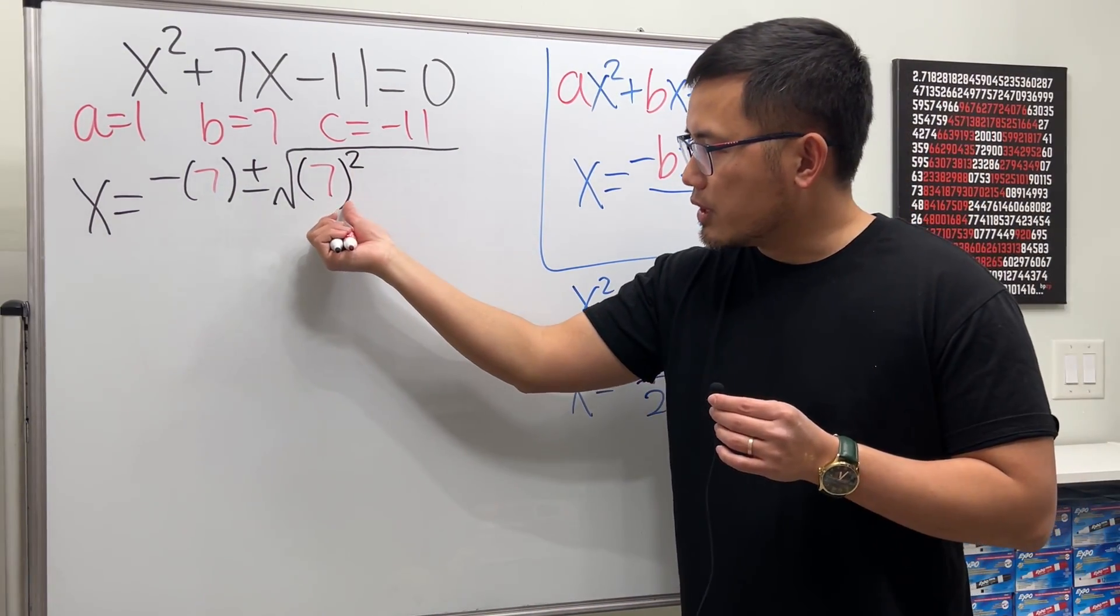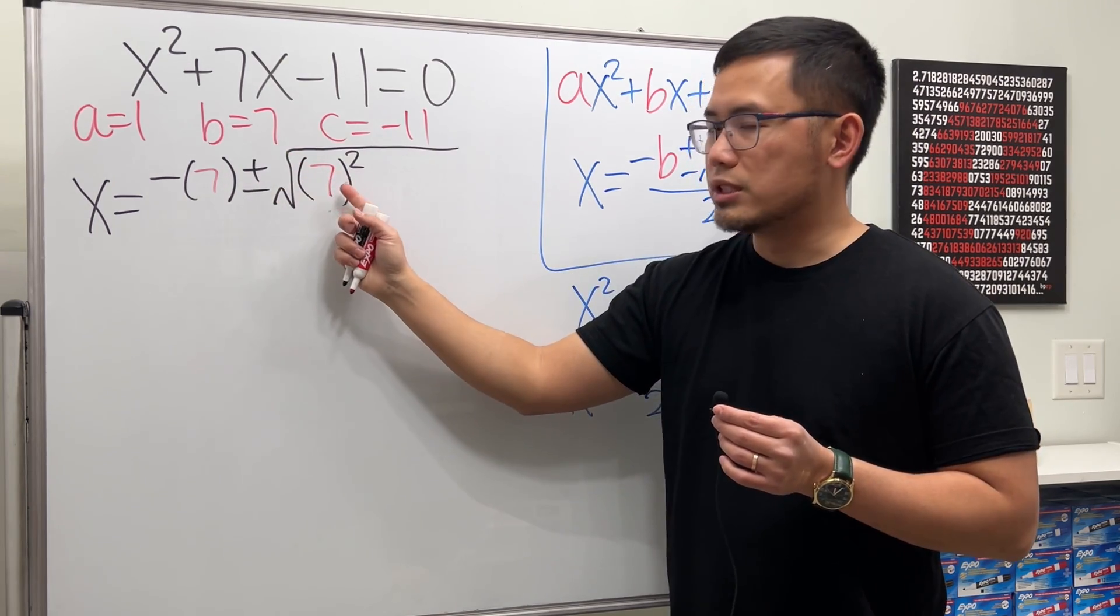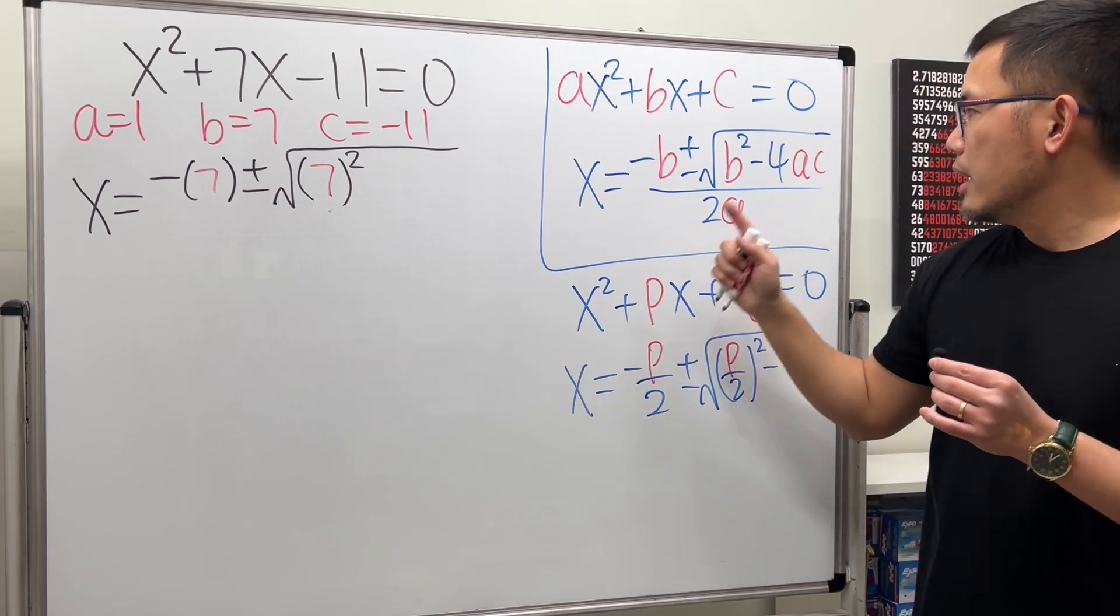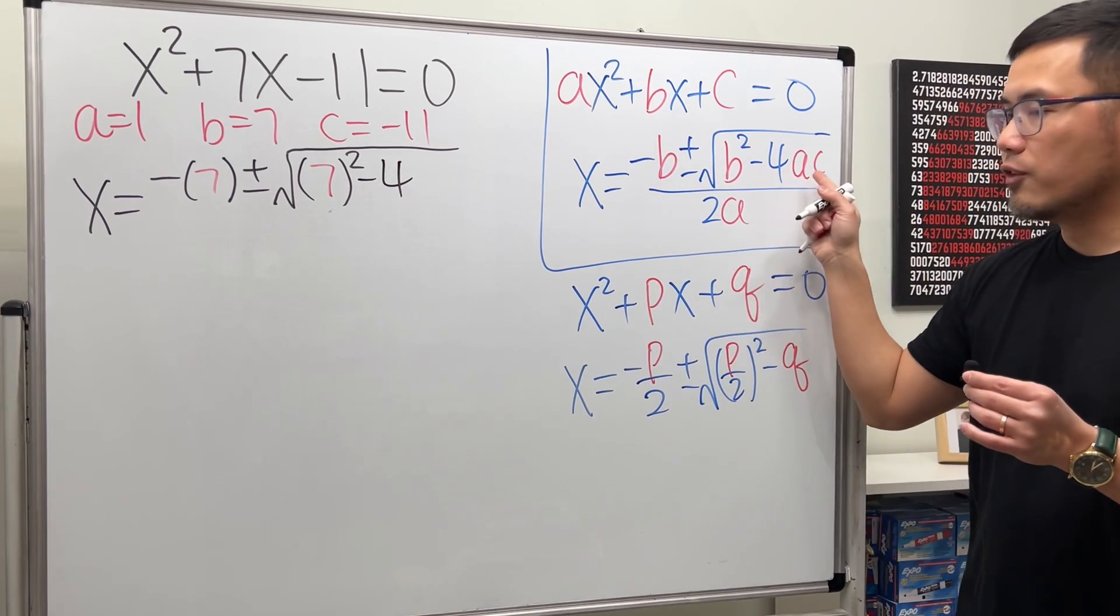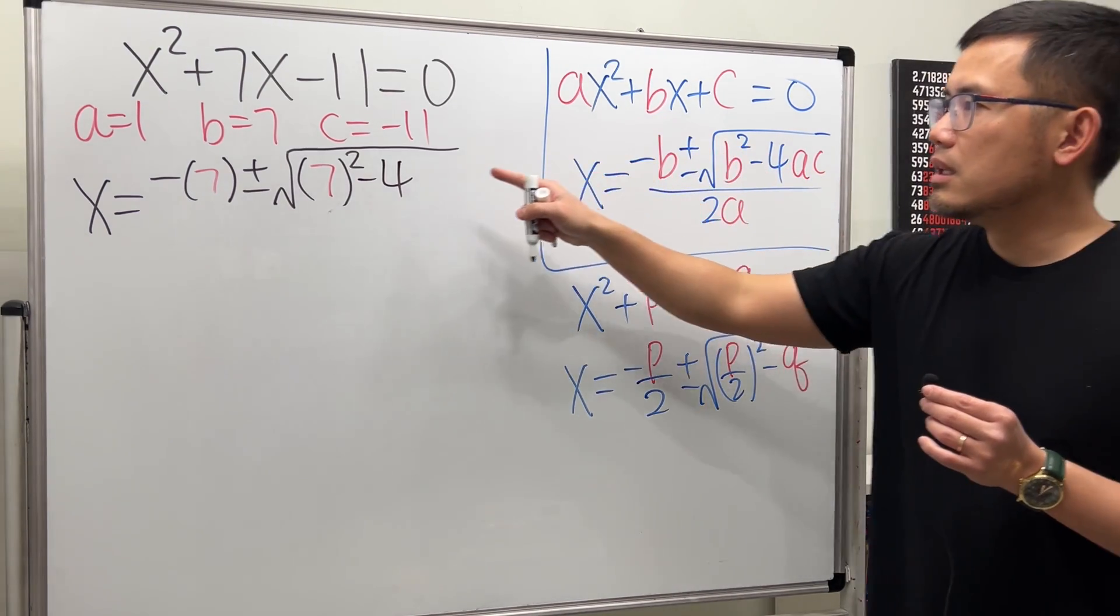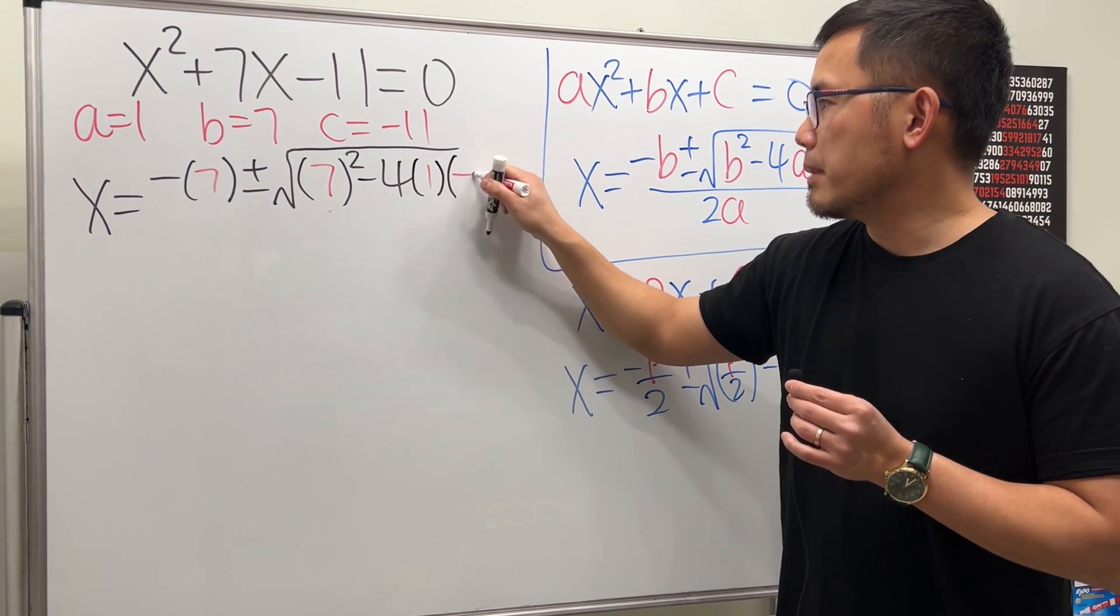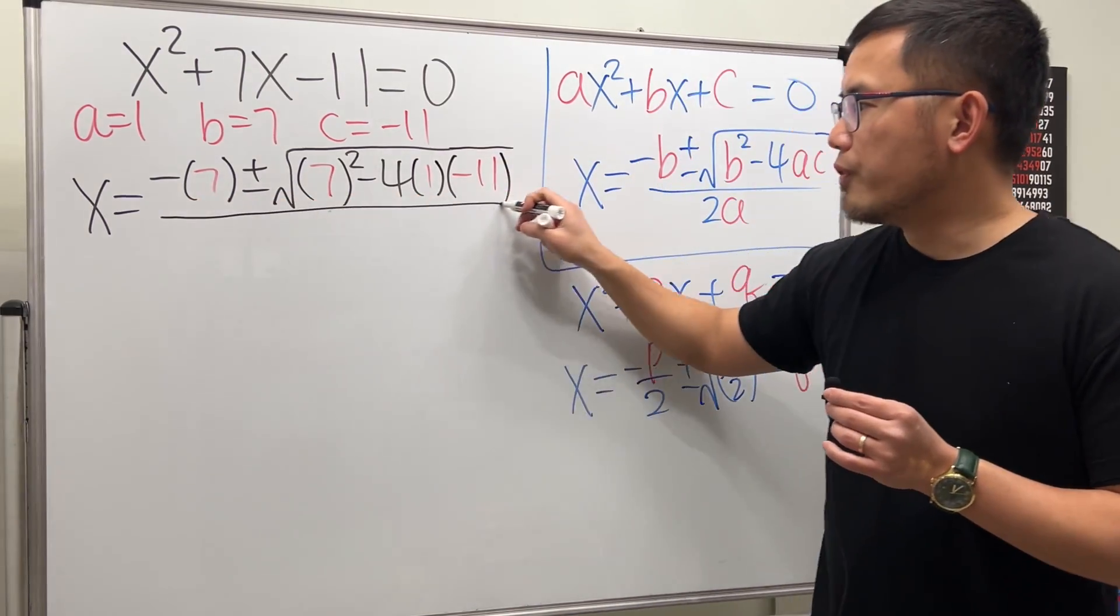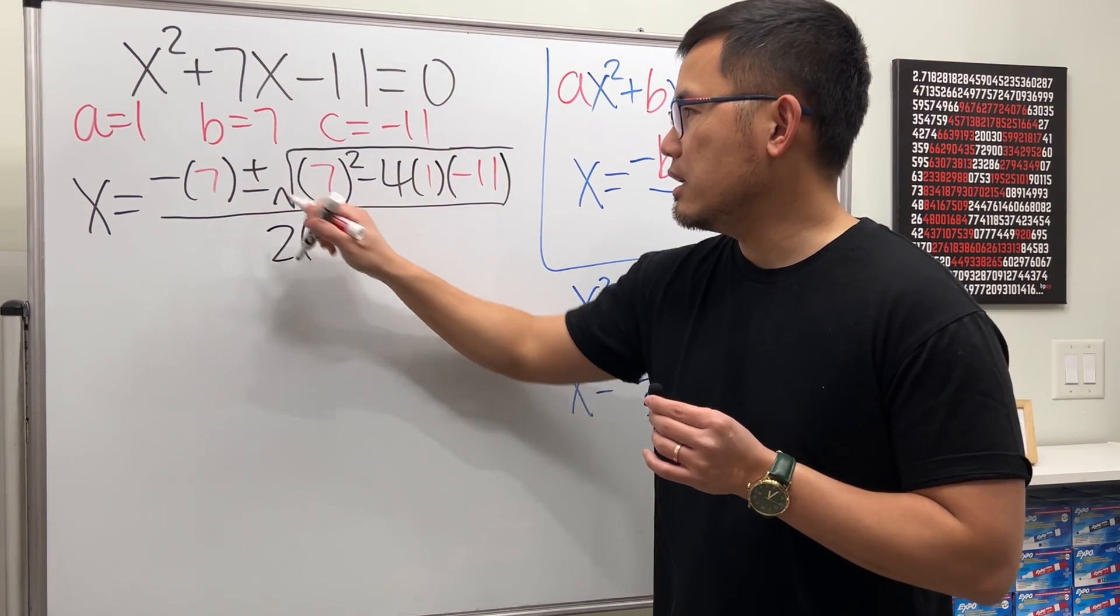Be really careful for this part because sometimes if the b is a negative value, then you really need to use the parentheses to make sure you square that b value. And then continue, we have the -4. This -4 is from the formula, and then we multiply the a and c together. So a is 1 and c is -11, so multiply by 1 and multiply by -11. And then all over 2 times a, so 2 times a is 1.